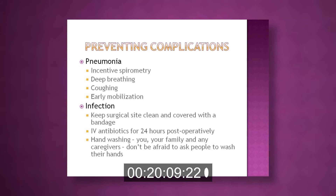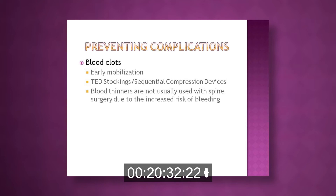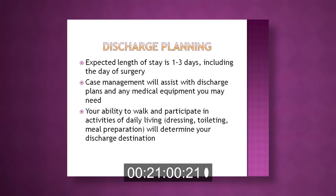For infection prevention, we usually leave dressings on until discharge and give IV antibiotics for 24 hours after surgery, which research shows is the best way to prevent infection. Frequent hand washing is encouraged — you can also remind your family to wash their hands. For blood clot prevention, we use early mobilization and sequential compression devices on all patients whenever they are in bed. We do not typically use blood thinners. The case manager will evaluate you on rounds and assist with any discharge planning needs.